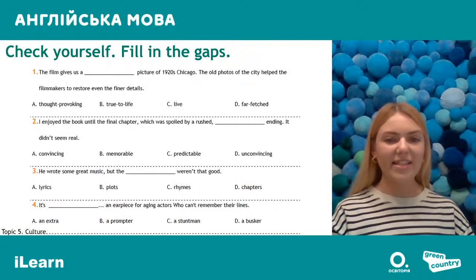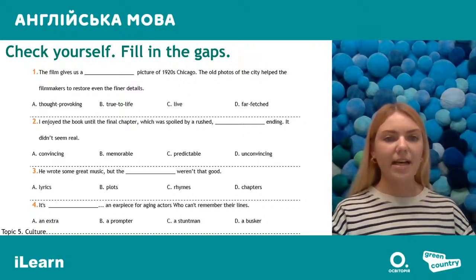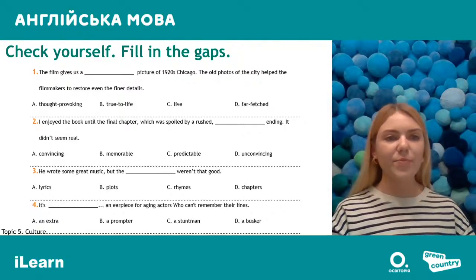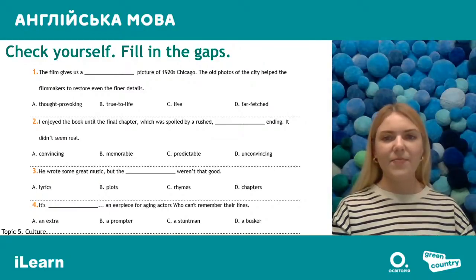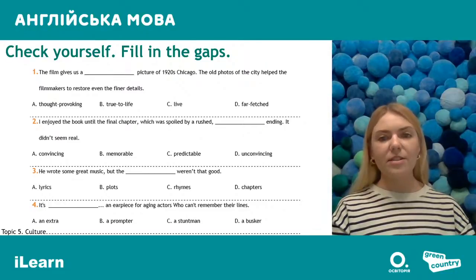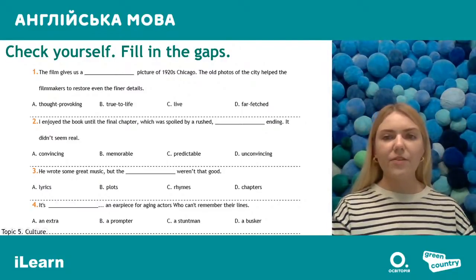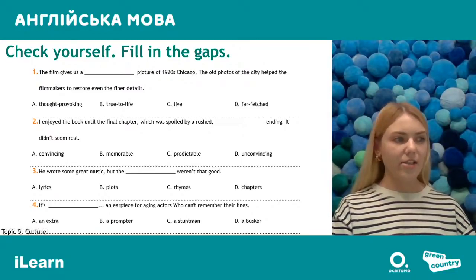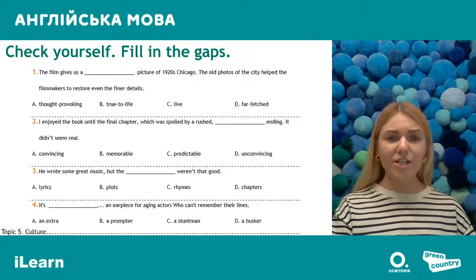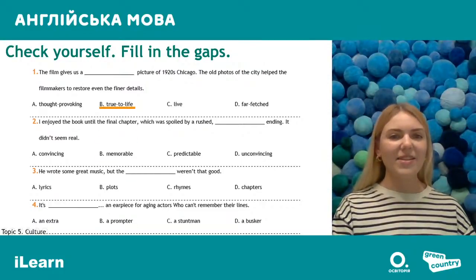Now let's practice. We need to fill in the gaps in sentences and choose the correct answer. Some words we have already discussed, some are new. Let's look at the first sentence: 'The film gives us a picture of 1920s Chicago. The old photos of the city helped the filmmakers to restore even the finer details.' The right answer is B — 'true to life'.